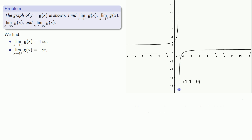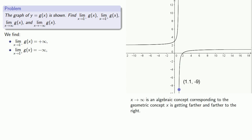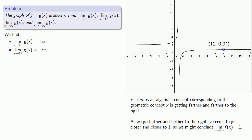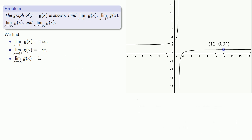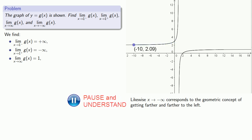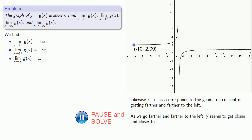How about this concept of x going to infinity? Well, this is an algebraic concept corresponding to the geometric concept of x getting farther and farther to the right. And we see that as we go farther and farther to the right, y seems to get closer and closer to 1, so we might conclude that the limit as x goes to infinity of g of x is 1. Finally, as x goes to minus infinity — corresponding geometrically to getting farther and farther to the left — y seems to get closer and closer to 2. And so the limit as x approaches minus infinity of g of x is equal to 2.